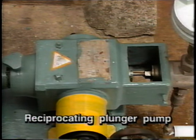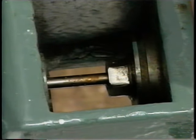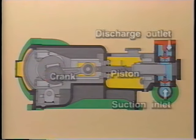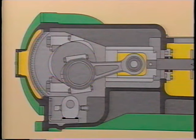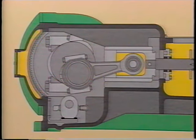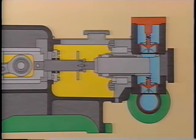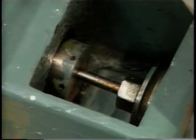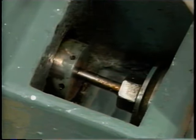This is a reciprocating plunger pump, a type of piston pump. The rotation generated by the motor on the crankshaft is changed to reciprocation to drive the piston. The liquid is pumped from the suction valve to the discharge valve. Since it is relatively easy to adjust the pressure, this type of pump is often used for pumping fluids up to a high level.